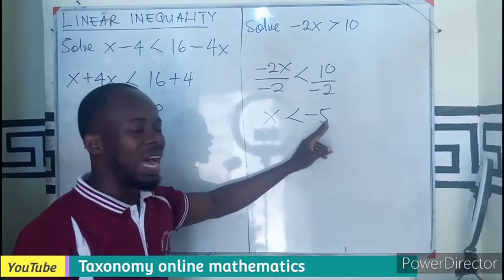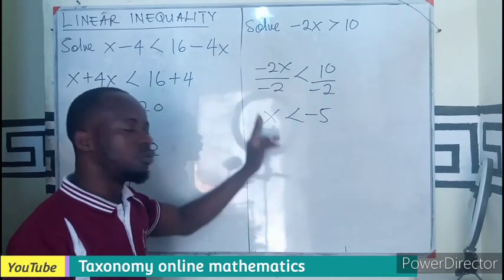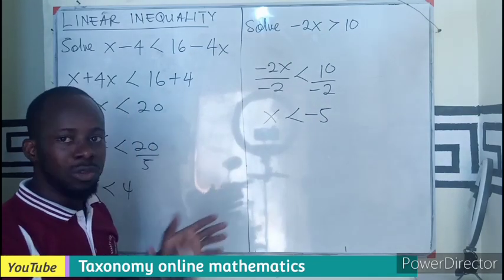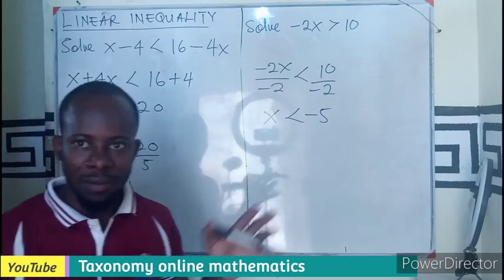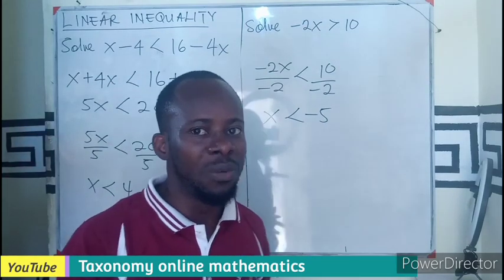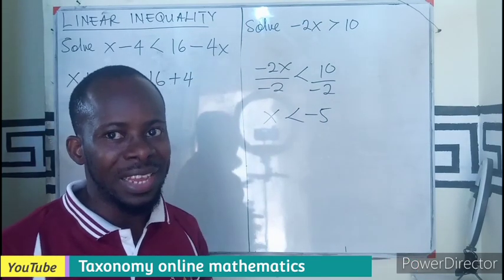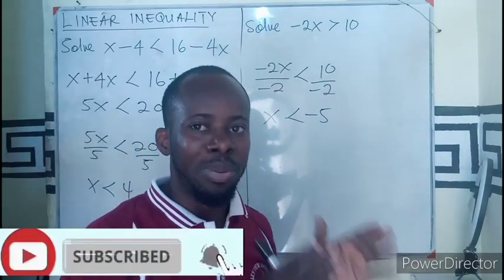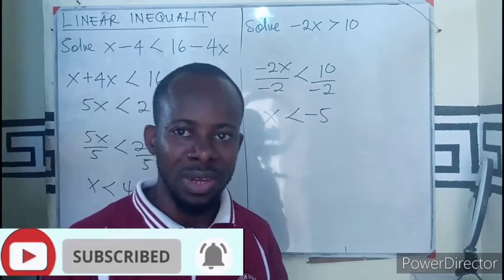So all values that are less than -5, x can assume to make this inequality true. I believe you get the two aspects clear. If you follow, try to share with your learning mates, like and comment. In the next episode we'll take the one that involves brackets and fractions. Bye!